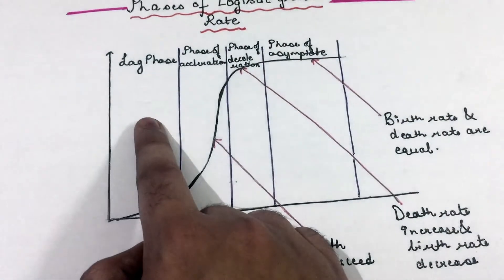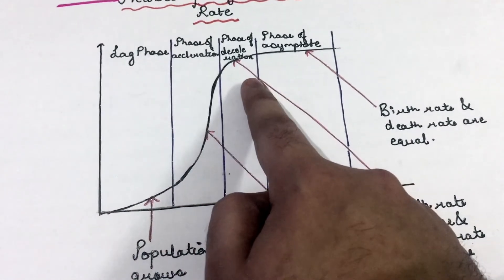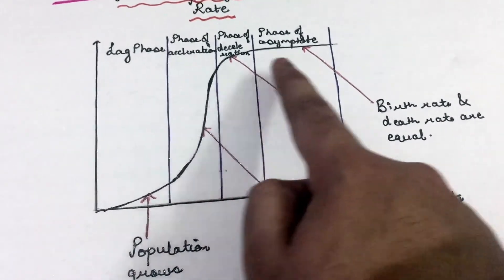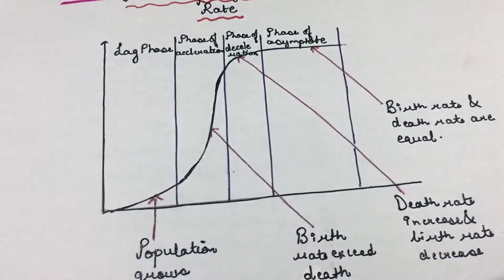So the four phases of the logistic growth curve are: lag phase, phase of acceleration, phase of deceleration, and phase of asymptote.